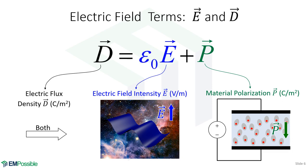The electric field term D is the all-inclusive term that includes both forms of energy: the energy in the field itself and the electric energy stored in matter. It has units of coulombs per meter squared. The electric field intensity E has different units, so we multiply by the free space permittivity to give the vacuum electric energy the same units, allowing us to add E and P to get our D term.